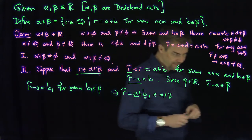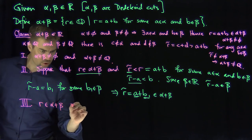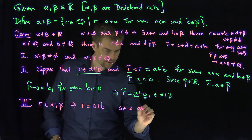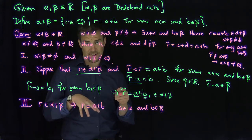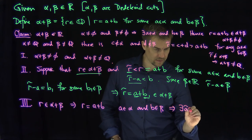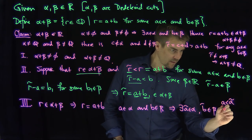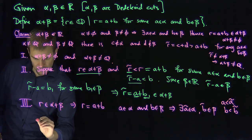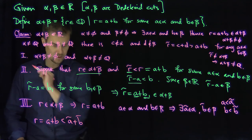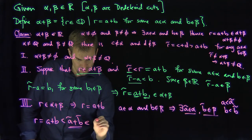Finally, condition three: suppose that r is in alpha plus beta, which means r looks like a plus b where a is in alpha and b is in beta. I can find a-tilde which is larger than a in alpha, and I can find b-tilde which is larger than b in beta. This implies there exist a-tilde in alpha and b-tilde in beta with a less than a-tilde and b less than b-tilde.